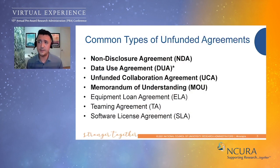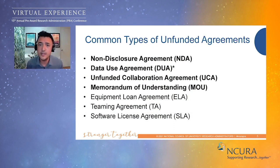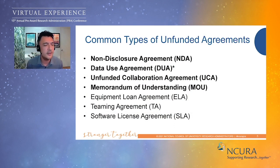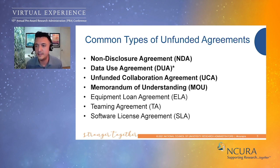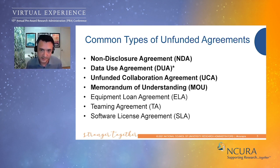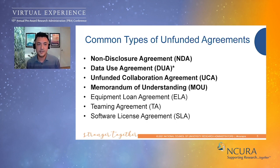Recently we've seen large federal datasets from NIH and other agencies that require you to sign a data use or data transfer agreement before you can receive the data. These agreements protect data that isn't in the public domain — not something you can just Google and download in a spreadsheet. We're talking about things like patient data and student data.